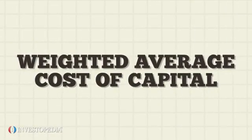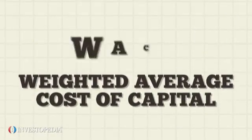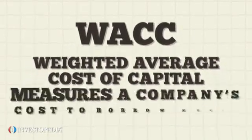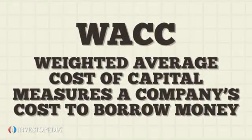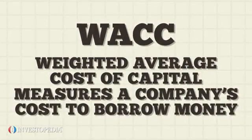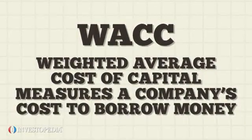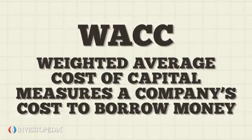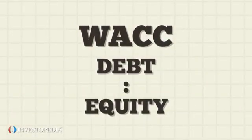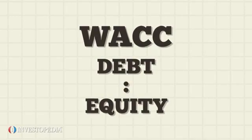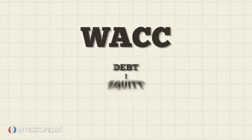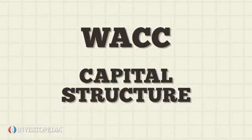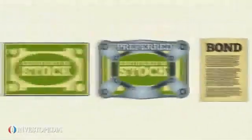Weighted Average Cost of Capital measures a company's cost to borrow money given the proportional amounts of each type of debt and equity a company has taken on. A company's debt and equity, or its capital structure, might include common stock, preferred stock, and bonds.